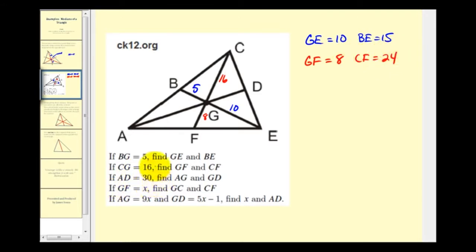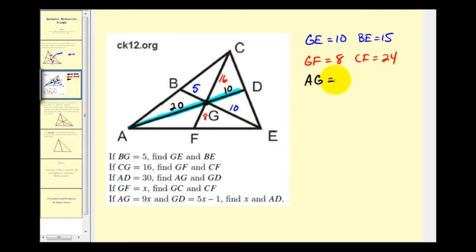Next we're given that AD equals thirty — that's the length of the entire median. We want to determine the length of AG and GD. The length of the longer segment AG would be two-thirds the total length: two-thirds of thirty would be twenty. And if the total length is thirty and AG is twenty, then GD would be ten. Notice that GD is half the length of the longer segment AG.